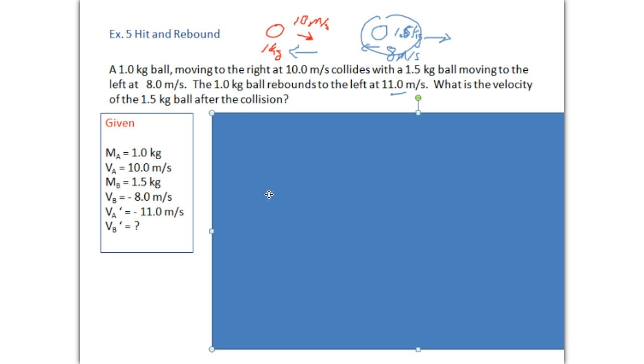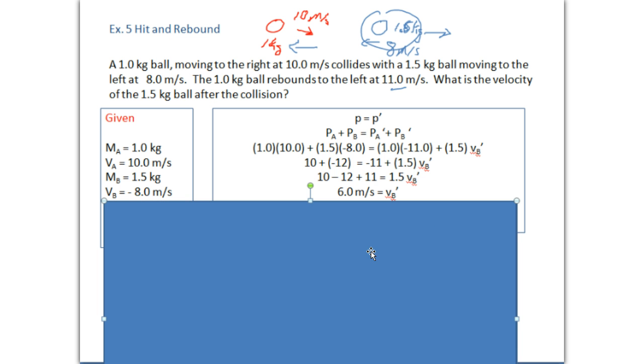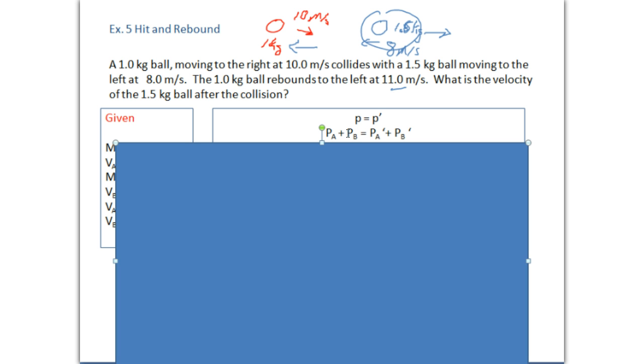So again, start with what you're given. So you know the mass of each and the velocity. Remember, anything to the left is a negative. Momentum before should equal momentum after. Ball A, ball B. Doesn't matter which one you call A, whether it's the 1 kilogram ball or 1.5. I'll just start with the one that I read first.